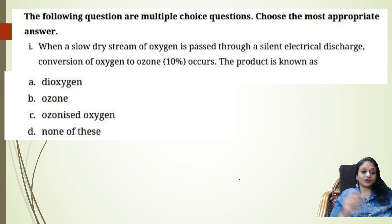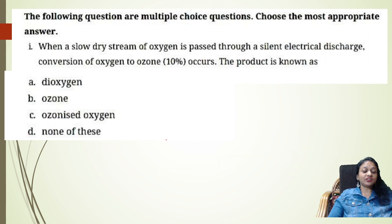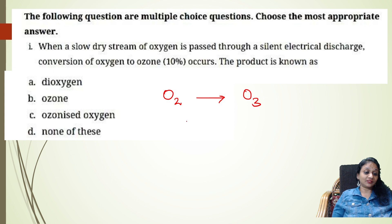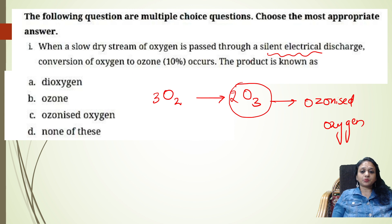Question 1: When a slow dry stream of oxygen is passed through a silent electric discharge, conversion of oxygen to ozone of about 10% occurs. What is the product formed? We know that when a silent electric discharge is used, three oxygen atoms form two ozone molecules. Whatever ozone we get — about 10% — that product is called ozonized oxygen. So the answer is ozonized oxygen.